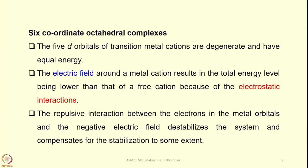When we consider 6-coordinate octahedral complexes, this is how crystal field theory investigation began. For any transition metal complex, the 5 d orbitals of these cations are degenerate and have equal energy. The electric field around a metal cation results in the total energy level being lower than that of a free cation because of electrostatic interactions. There will also be some repulsive interactions because ligands carry electrons and metals also have electrons, so the negative electric field destabilizes the system and compensates for the stabilization to some extent.